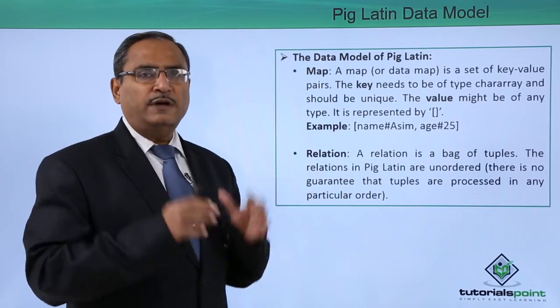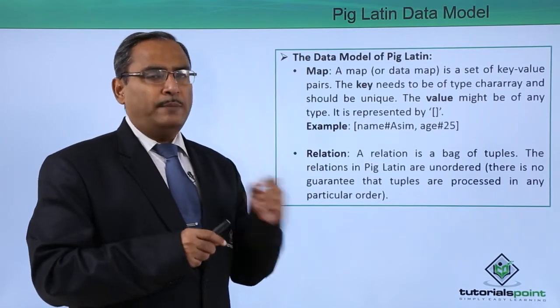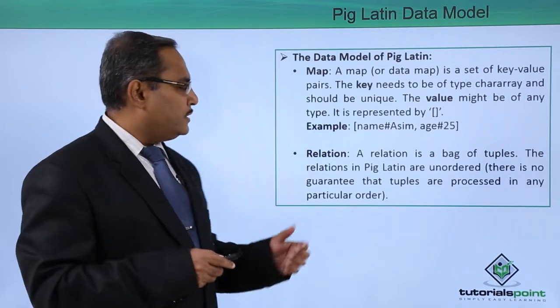Map is nothing but collection of key value pairs. Key will have the distinct values and values can have different data types.